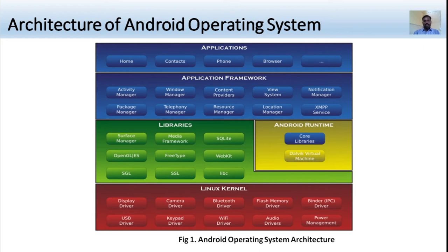Libraries include: surface manager, media framework, SQLite, OpenGL ES, FreeType, WebKit, SGL, SSL, and Libc. Android runtime consists of core libraries and the Dalvik virtual machine. The Linux kernel layer includes drivers for: display, camera, Bluetooth, flash memory, binder, USB, keypad, Wi-Fi, audio, and power management.